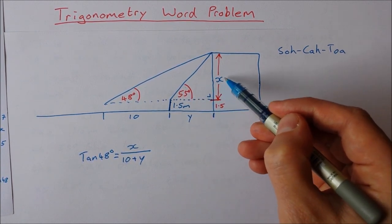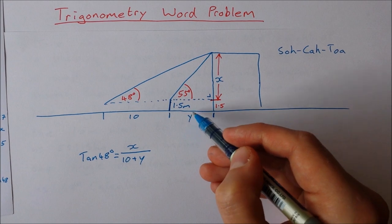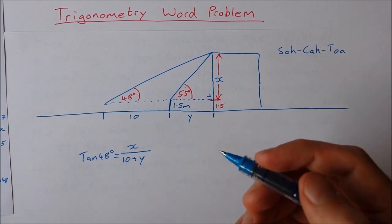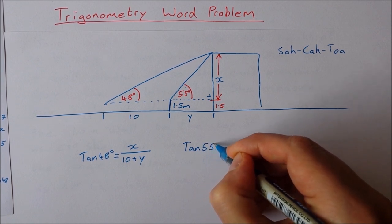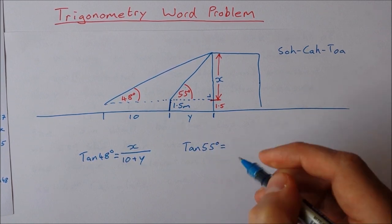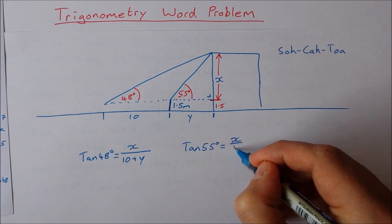So let's move to this smaller triangle. Now this smaller triangle I have an angle of 55 degrees. I want to know this side here. I don't know this side here but it is relevant. So again I'm going to use tan. The tan of 55 degrees is equal to x over y.